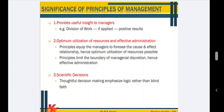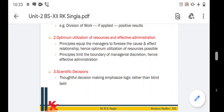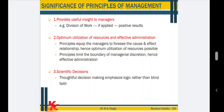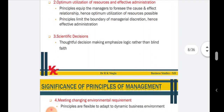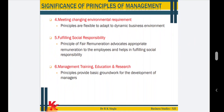Principles limit the boundary of managerial discretion, hence effective administration. So it tells us how optimally we can utilize our resources. Scientific decisions — with the help of principles of management, we can scientifically take decisions. The decisions which we make have logic rather than blind faith. Then, meeting changing environmental requirements — principles are flexible, not rigid, so we can change with the changes taking place in the business environment.